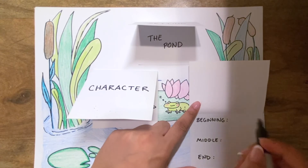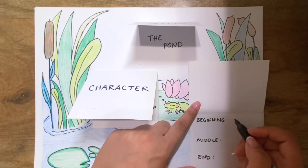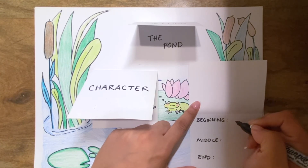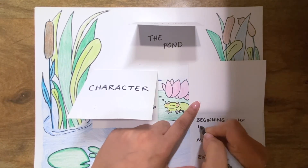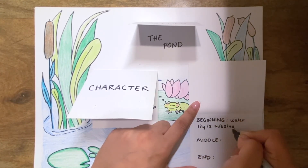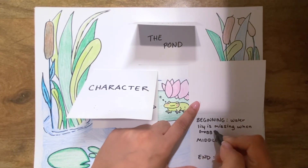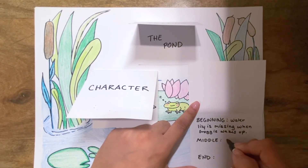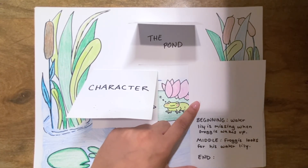Now we will go to what the beginning event was: the water lily was missing when Froggy woke up. Now for the middle, we will write that Froggy looks everywhere for his water lily. Then, at the end, we will write that Froggy found his water lily.